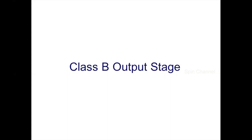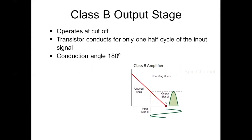Biasing an amplifier at cutoff saves power. In Class B amplifier, the operating point is located in the cutoff region. Hence, the transistor conducts only for 180 degrees or half of the input signal, making Class B amplifier more efficient as compared to the Class A amplifier.